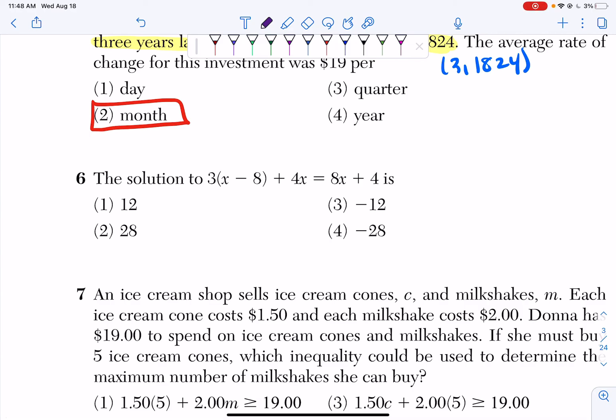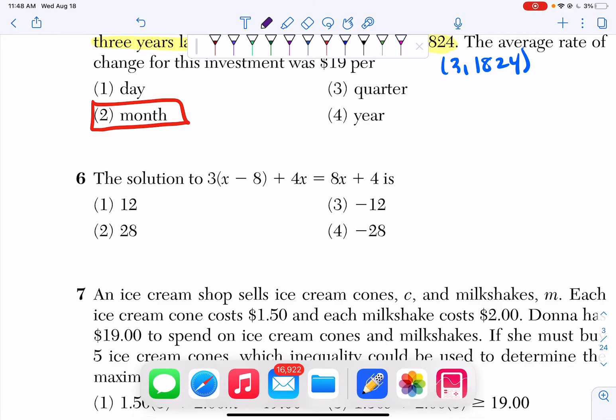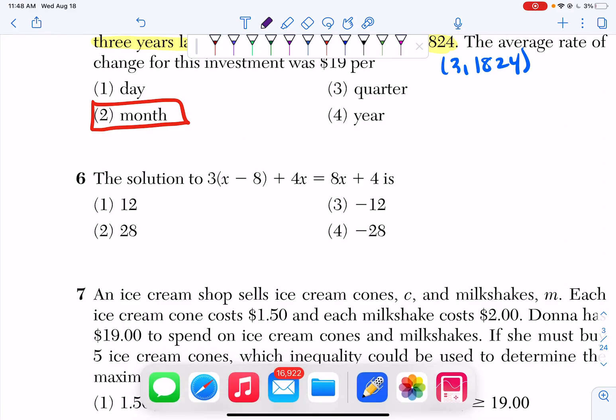Question number six. The solution to 3 times x minus 8 plus 4x equals 8x plus 4 is? So there are two ways to do this. We can do this by hand or we can do it on the calculator.